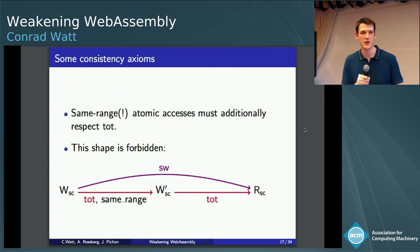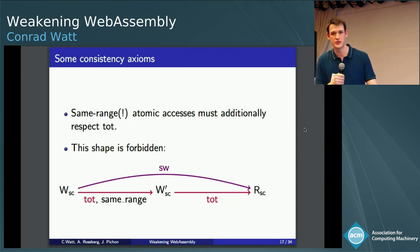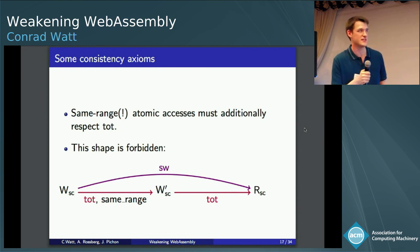And finally, as I said, tot is a bit weaker. The only thing tot does in the original JavaScript model is to constrain when SC atomics of the same size have to appear sequentially consistent. And this shows up in the original model as this shape, which is saying that if I have two sequentially consistent writes related by tot, and then I have another sequentially consistent read also of the same width related by tot, you're not allowed to read the stale value. You have to read the new one.